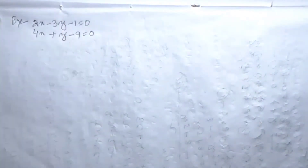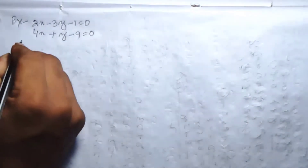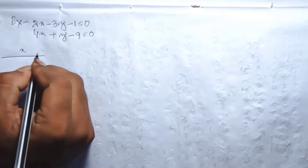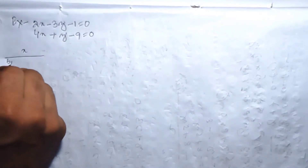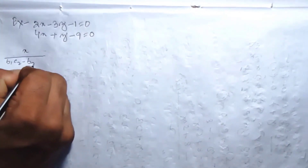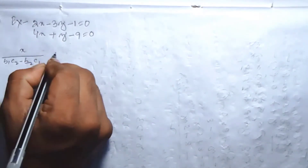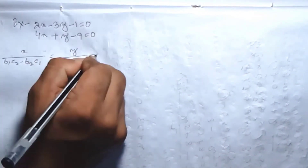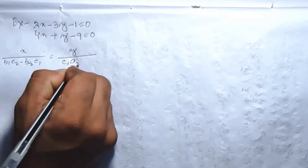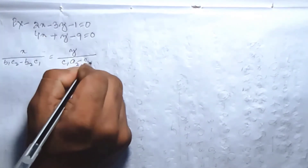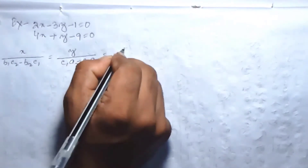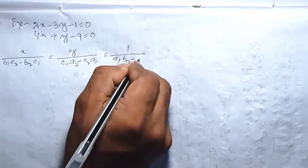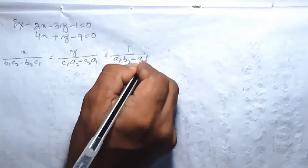The complete cross-multiplication formula is: x by b1 c2 minus b2 c1 equal y by c1 a2 minus c2 a1 equal 1 by a1 b2 minus a2 b1.